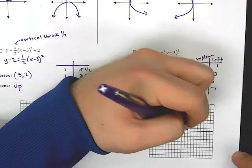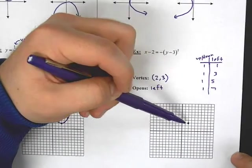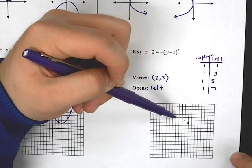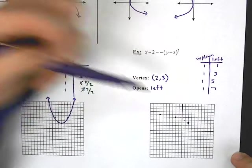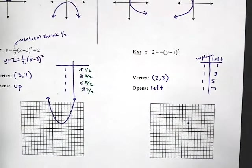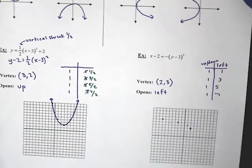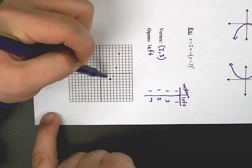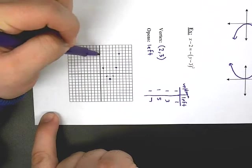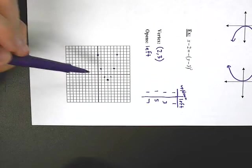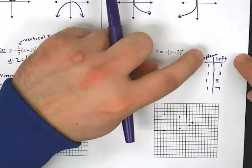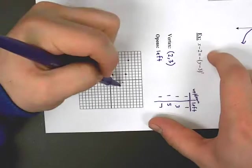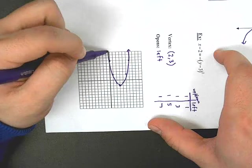There are a couple ways to do this. Once we plot our vertex at (2, 3), you can go up 1 left 1, up 1 left 3, up 1 left 5. Or — and I think it's a little easier — you can actually turn your paper. If you turn your paper, then it's just a normal growth pattern: 1, 3, 5, 7. You can use a normal growth pattern by turning your paper, or you can think about how the directions change. Either way, you get your left-opening parabola.